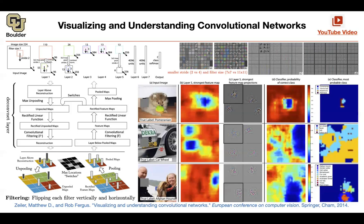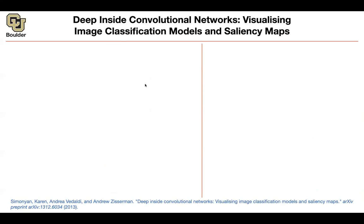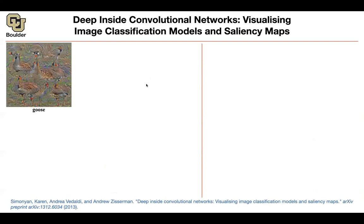The idea here is that you want to visualize your image classifier. One way to visualize — and this is really nice because your neural networks are now dreaming about goose — is the idea of class model visualization. You look at the score of a particular class, in this case goose, for some input, and that gives you the score before pushing it through a softmax.